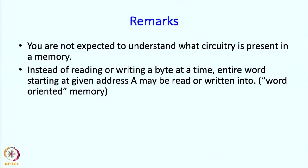This description is very superficial — I have not told you what circuitry is present, just that circuitry exists which does this movement. This black box called memory has 2-3 openings through which it communicates with the rest of the world. This organization can also be somewhat different. For example, instead of reading one byte at a time, you may read one word. A word starting at address A may be read or written to, and in such a case the memory is called a word-oriented memory.